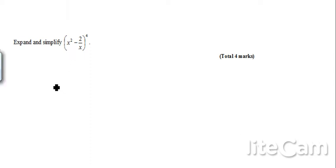Okay, so next we're going to look at some binomial expansions. Here we go, the first question: expand and simplify x squared minus 2 over x, all in brackets, to the power 4.